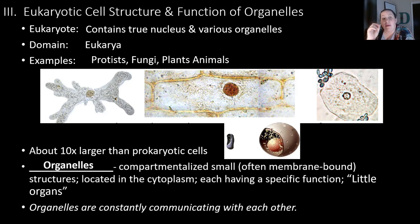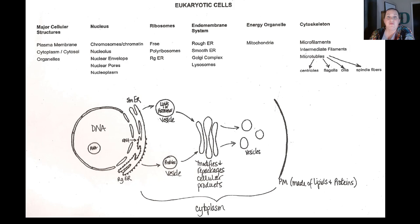Organelles are compartmentalized small structures that have a specific function, and they have to communicate with each other for the cell to be successful. The major cellular structures include the plasma membrane, the cytoplasm or cytosol, and the organelles. We have the nucleus and all of its parts, as well as ribosomes, the endomembrane system — a series of membrane-bound organelles that work together — our energy organelles, and the cytoskeleton.